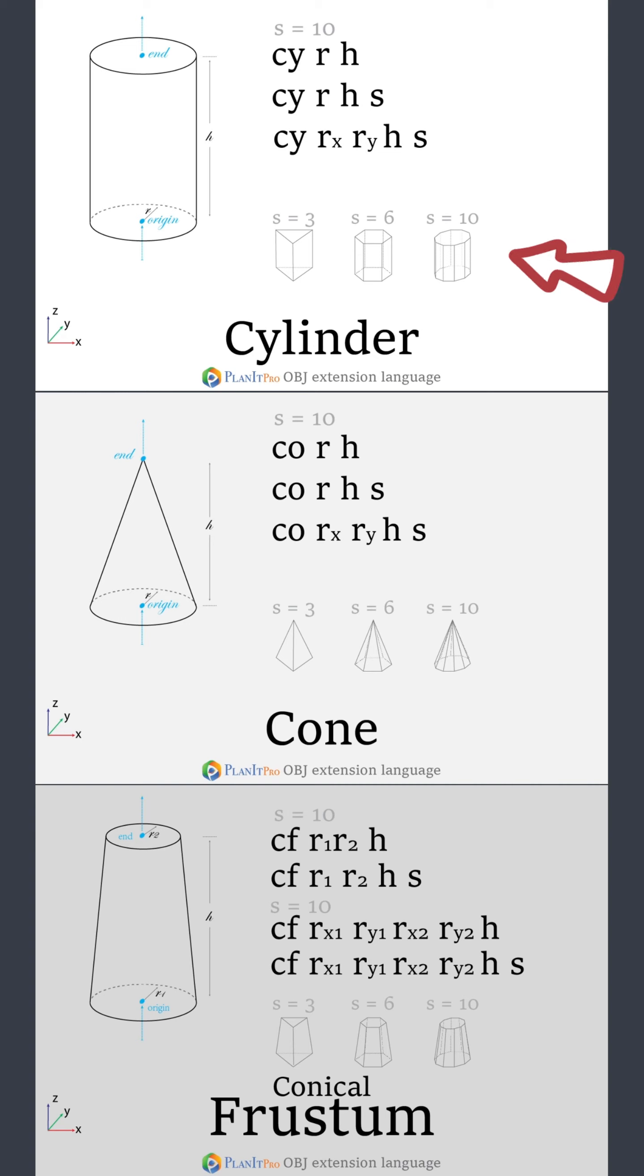For example, if you use 3, the base will be a triangle. If 6, it'll be a hexagon. The base can also be an oval instead of a circle by using different Rx and Ry as shown in the last format.